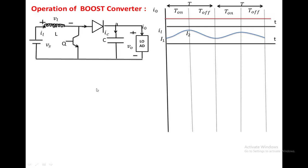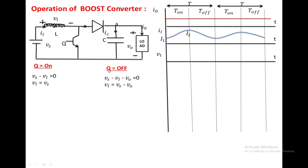Now we look at the voltage across the inductor. When the switch is on, applying KVL in this loop: V_S minus V_L equals zero, so V_L equals V_S. When the switch is off, current passes through the other path. Applying KVL in this loop: V_S minus V_L minus V_0 equals zero, so V_L equals V_S minus V_0. Since it is a boost converter, the output voltage is greater than the input voltage, so the voltage across the inductor during the off state is negative.